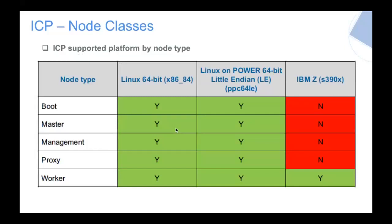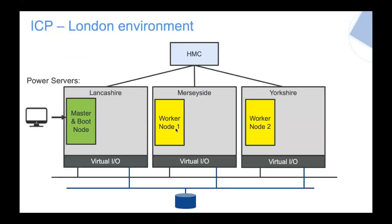My environment in London looks like this at the moment. I have a number of Power servers, and I have a single combined Master and Boot node — this is purely for a demonstration lab, adequate for that purpose. The user interface connects directly to that Master and Boot node. I've got a couple of Red Hat VMs on other servers as Worker nodes — these are the ones that do the grunt work and run the containerized applications. They're connected via servers to our network and storage. They could be dedicated bare-metal servers; we don't have to run them in PowerVM mode, we can run them on KVM, Nutanix, and a couple of other solutions.